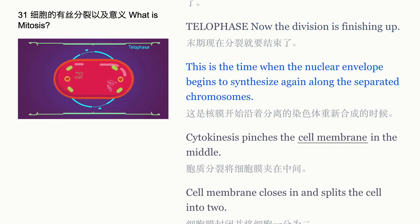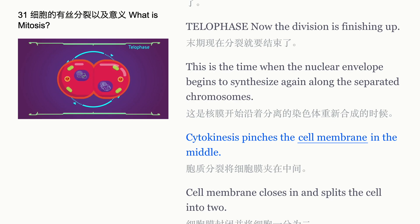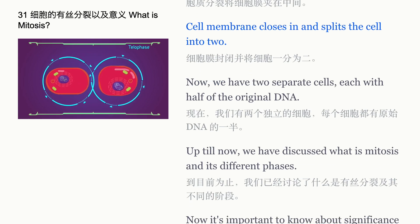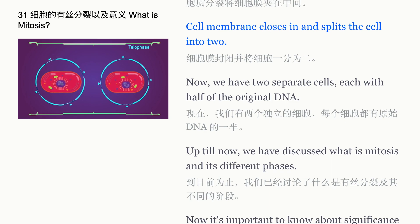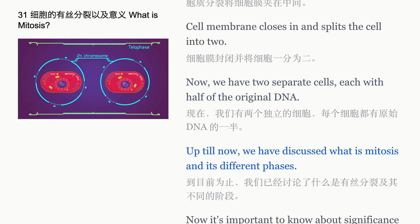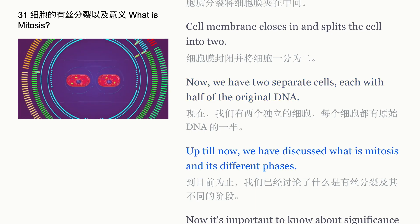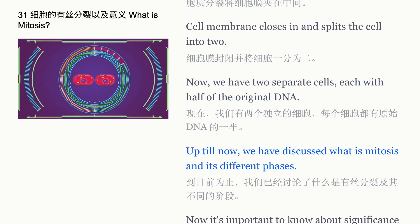Telophase: now the division is finishing up. This is the time when the nuclear envelope begins to synthesize again along the separated chromosomes. Cytokinesis pinches the cell membrane in the middle — the cell membrane closes in and splits the cell into two. Now we have two separate cells, each with half of the original DNA.